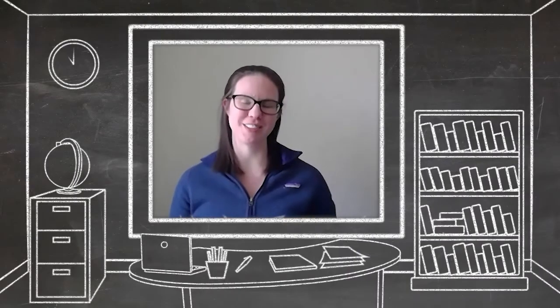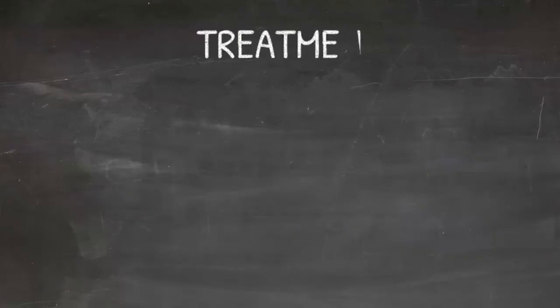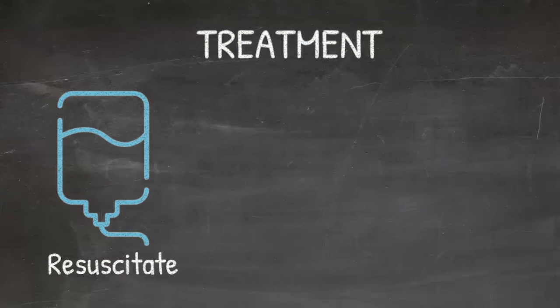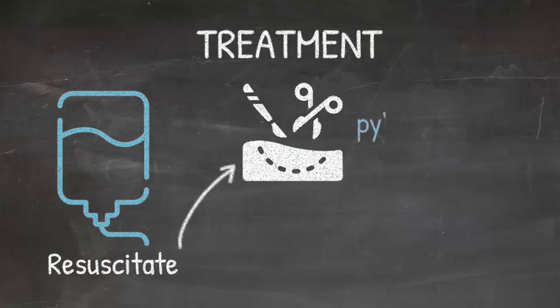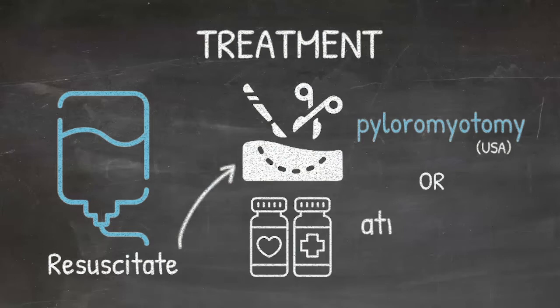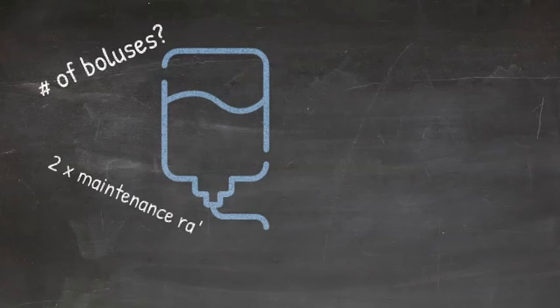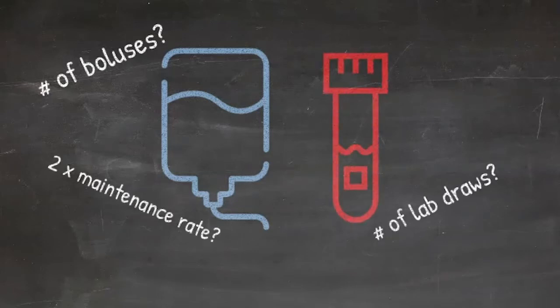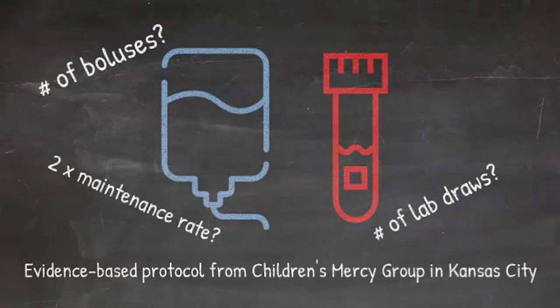How is pyloric stenosis treated? First step is to resuscitate to correct volume and electrolyte abnormalities. In the U.S., pyloromyotomy is the standard of care. In some countries, atropine is used as a non-surgical option with a success rate of about 60 to 90 percent. Institutions may have their own protocols involving fluid boluses, increasing maintenance fluid rates, and repeating lab draws. At Cincinnati Children's, we follow a protocol published by the Children's Mercy Group in Kansas City that takes the guesswork out of how many boluses to give and how frequently you should draw labs.